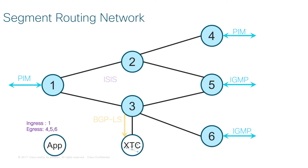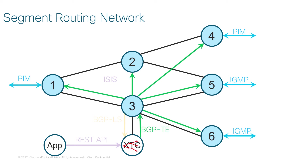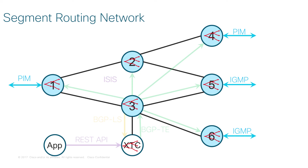At the other end, there is an application providing information about multicast sources like a video headend and all interested parties. The application then provides that information to the controller using a RESTful API. Now the controller has all the information it needs to calculate an efficient loop-free forwarding tree inside the whole network. The next step is to provide each router with the necessary replication entries using BGP traffic engineering address family. This creates a full forwarding tree in the Segment Routing Network.